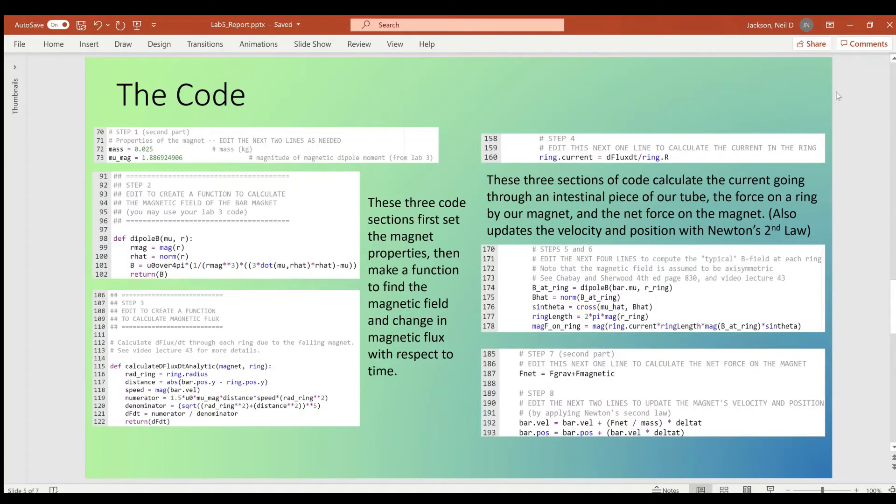Now on to the code of the lab. On the left, I have the first three segments, which was essentially setting up all my functions that determine the magnetic field strength and d-flux dt, as well as the initial properties of my magnet.